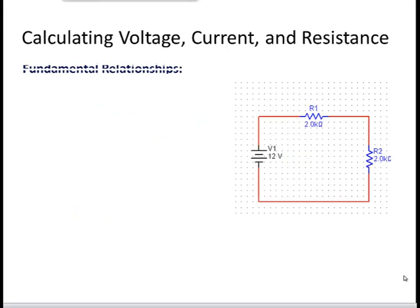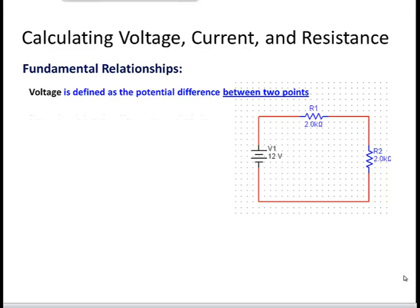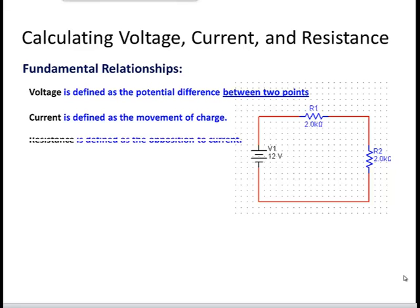First of all, let's review the fundamental relationships in any circuit. Voltage is defined as a potential difference between two points. Current is defined as the movement of charge. And finally, resistance is defined as the opposition to current.